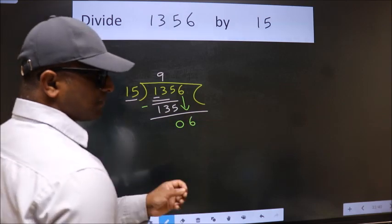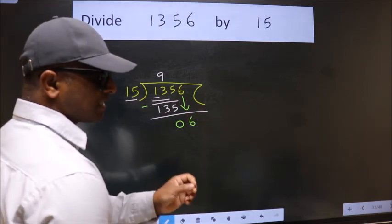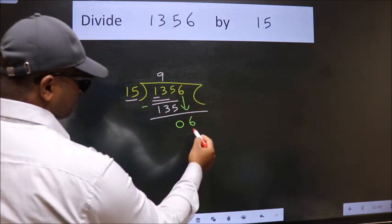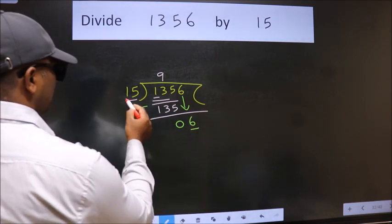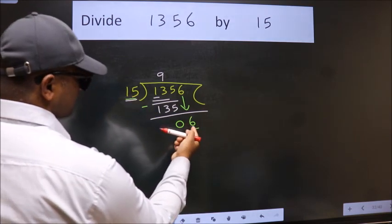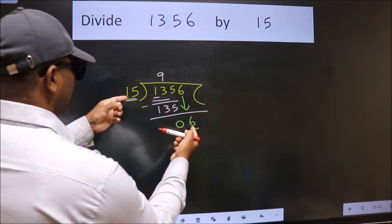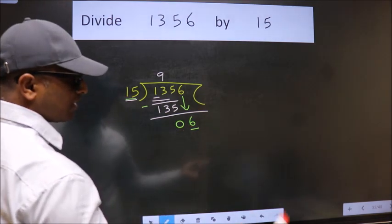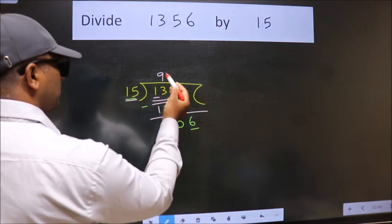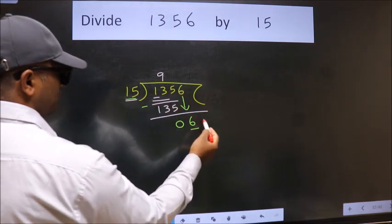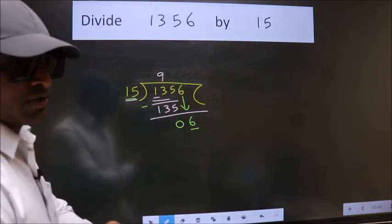After this step, the mistake happens. And the mistake is this: Here we have 6, and 15. 6 is smaller than 15. So what many do is they directly put a decimal point and write 0, which is wrong.